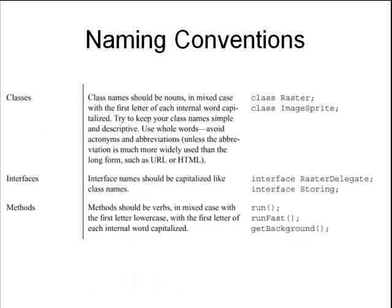Naming conventions. Classes are going to be nouns. The first letter of each word will be a capital letter. There will be no underscores or spaces between words. Rather, they'll all be concatenated together. So here I have image sprite. Notice the first letter of each word is capitalized. Interfaces will be named just like classes. Methods are going to have the first letter capitalized of each word with the exception of the first word. So notice it's run fast with R being lowercase.